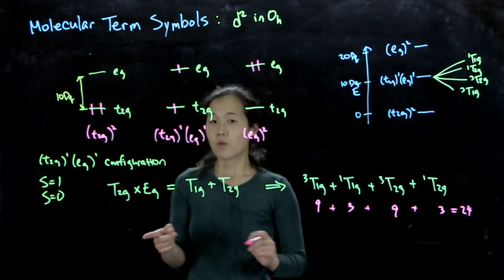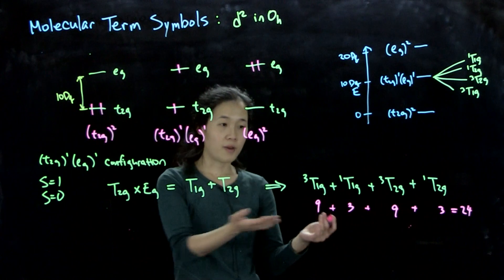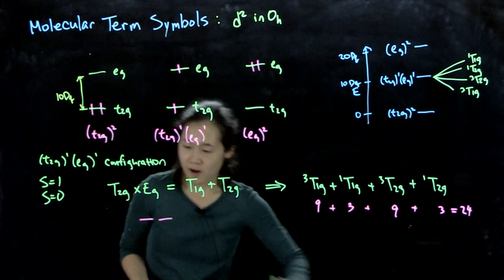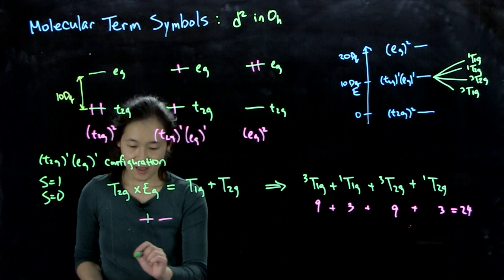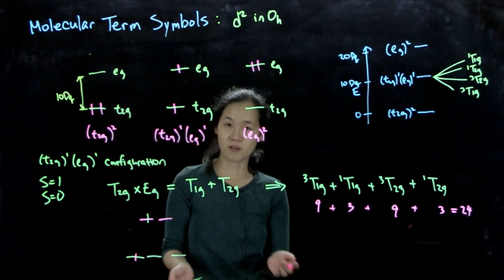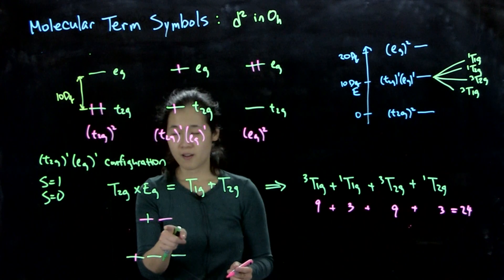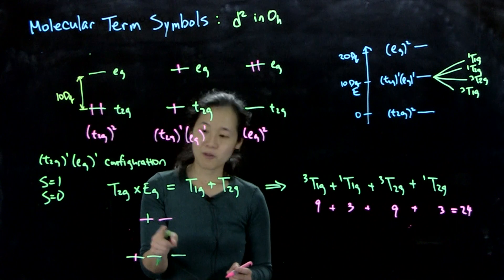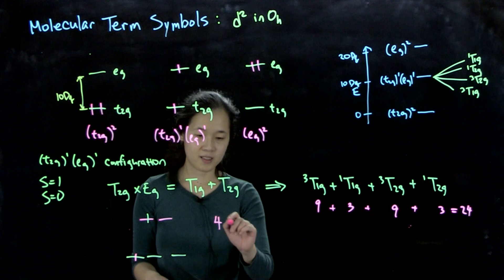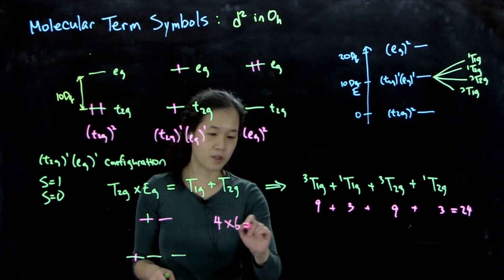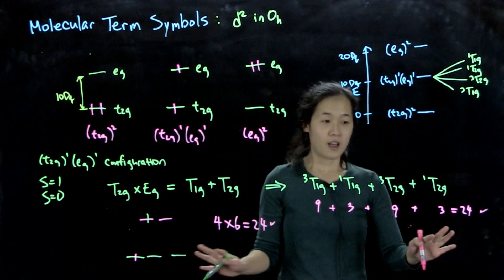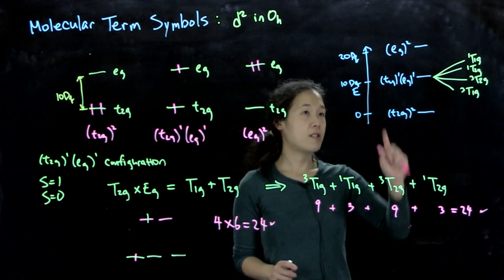And then so in principle, we should have 24 possible microstates. So if you think about this, we have our upper set of boxes with one electron. And then we have our lower set of boxes with one electron. So if we do our probability formula, here we have four different ways to fill this box. Here we have six different ways to fill this electron. So 4 times 6, this equals 24. So check and check.